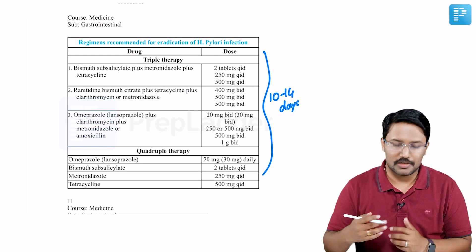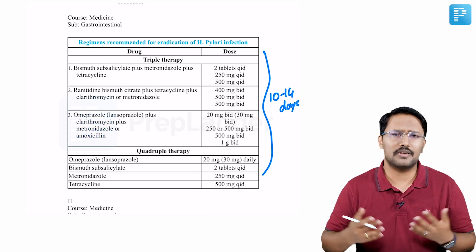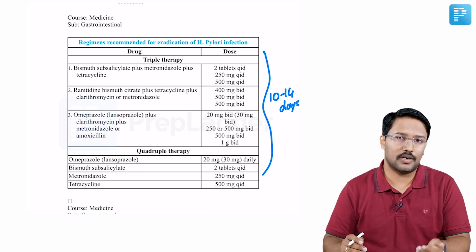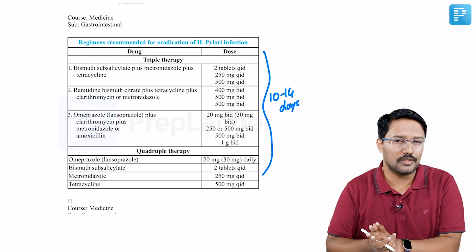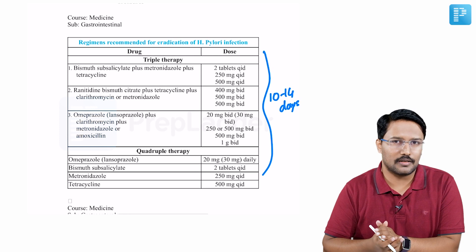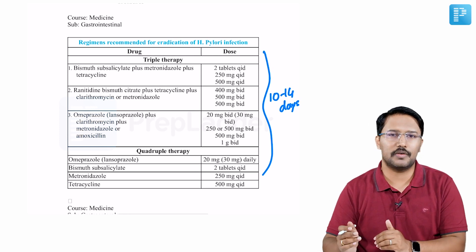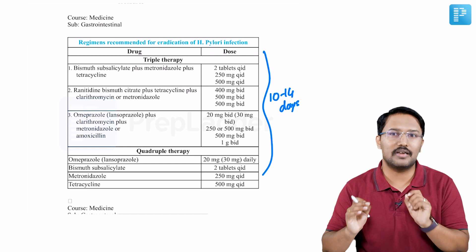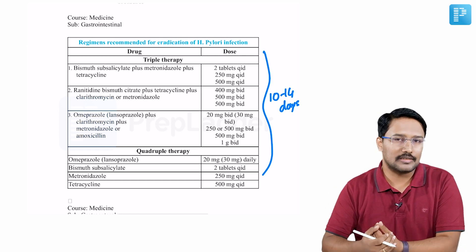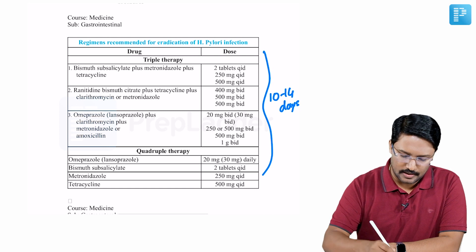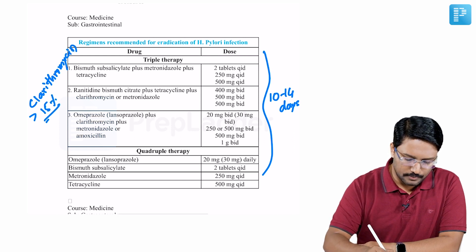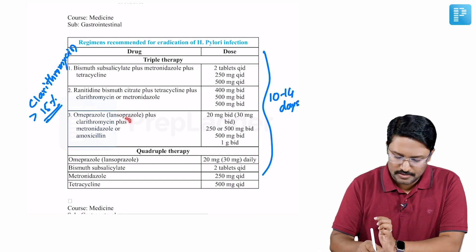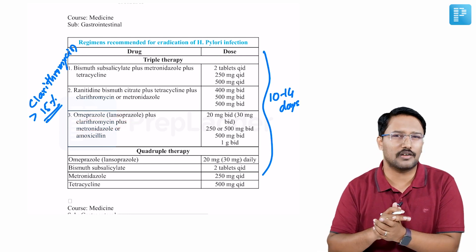In a country like India, clarithromycin resistance is extremely high. The most common reason is that azithromycin and other macrolides are used indiscriminately for any simple upper respiratory infection or sore throat, without even considering whether it is viral or bacterial. A random survey would show that most people took a course of azithromycin in the preceding three months. Because of this, when clarithromycin resistance exceeds 15 percent in the local population, clarithromycin-based regimens are not advisable.